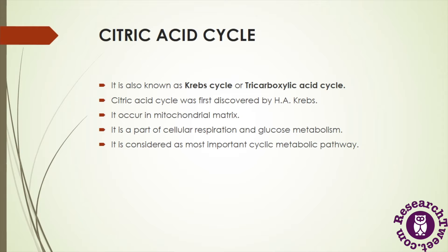The citric acid cycle is part of cellular respiration or glucose metabolism. Cellular respiration occurs in the mitochondria of the cell. This cycle is considered the most important cyclic metabolic pathway because it plays an important role in the metabolism of carbohydrates, lipids, and proteins.